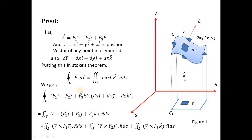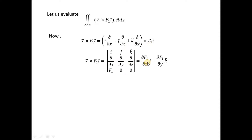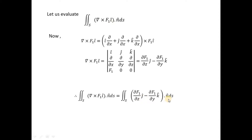By evaluating each term we can show that the sum equals the required expression — that is what we are going to prove. First, let us evaluate the first term. To do so, we find the cross product of del with F1 î. Taking the cross product gives us the result, and after mathematical calculation the final value of (∇ × F1 î) is obtained. Substituting this, we get Equation 1.